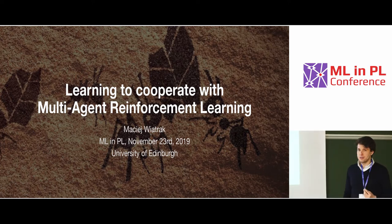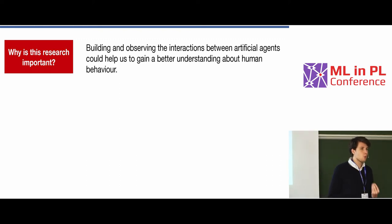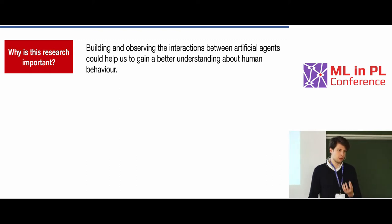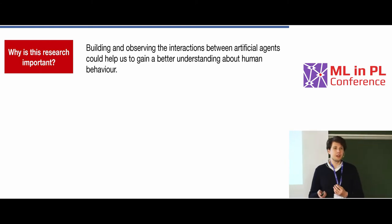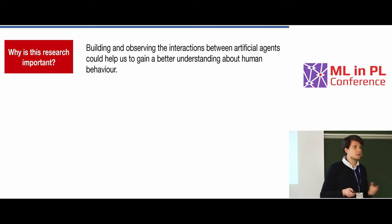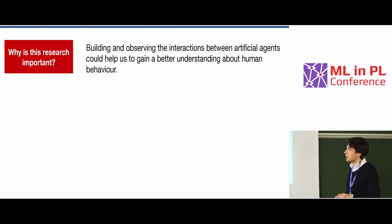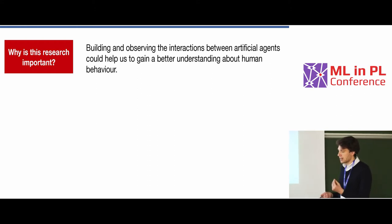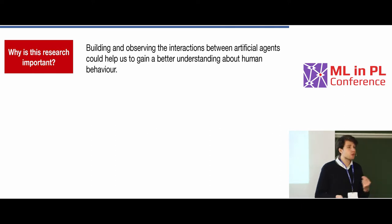The first thing I'd like to answer is: why should we care? Why is this research even important? The reason is that human intelligence is something that has been crafted over thousands of years of social interactions. And I believe that through building and observing the interactions between intelligent agents, we could gain a better understanding of human behavior.